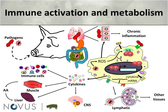Cytokines secreted by activated immune cells act first on immune system cells to combat infection, but also on other tissues. For example, in the central nervous system, cytokine release causes somnolence — when we're sick, the last thing we want to do is be active; we just want to sleep. Cytokines also have a direct effect on muscle and liver protein synthesis: they reduce skeletal muscle protein synthesis and increase protein synthesis in the liver.